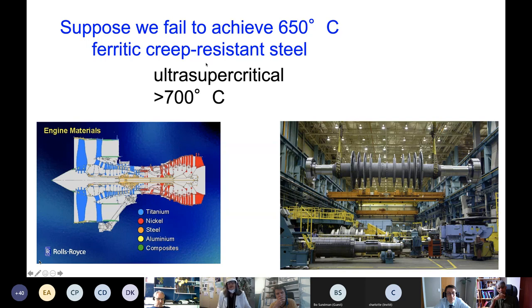Austenitic steels can cope, but they fail very quickly because their thermal expansion coefficient is very large compared with ferrite.